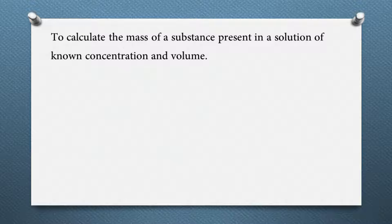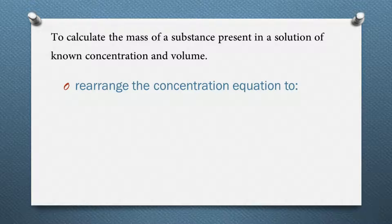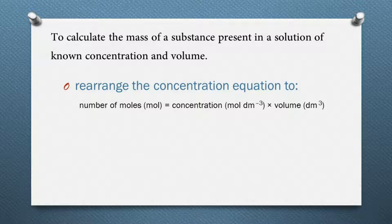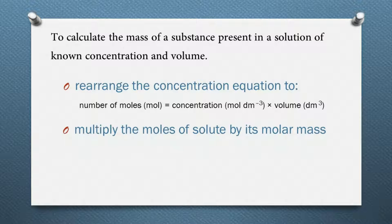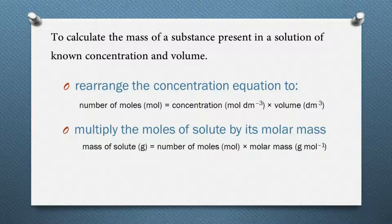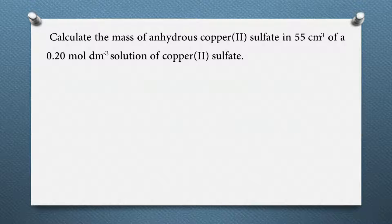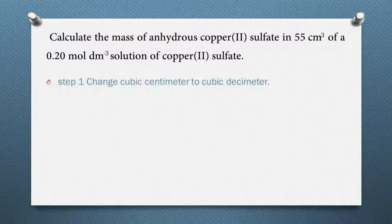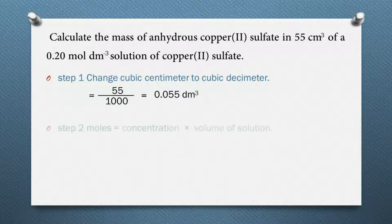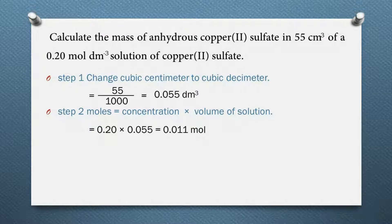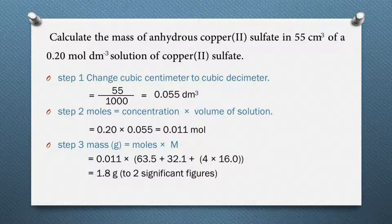Sometimes we have the concentration and volume of a solution but want to calculate the mass of the solute. To do so, we first calculate the number of moles of solute by multiplying the concentration by the volume, then multiply moles of solute by its molar mass. For example, let's calculate the mass of copper(II) sulfate in 0.055 dm³ (55 cm³) of a 0.2 mol/dm³ solution. Multiply concentration by volume: 0.2 × 0.055 = 0.011 mol. Then multiply by molar mass, giving 1.8 grams.